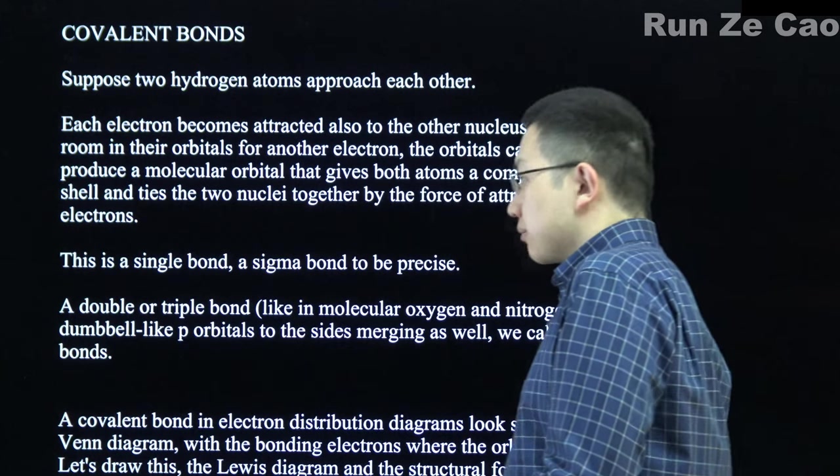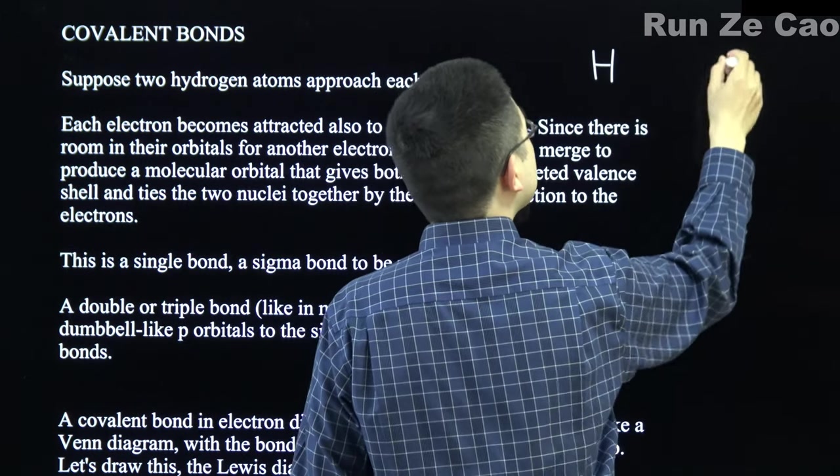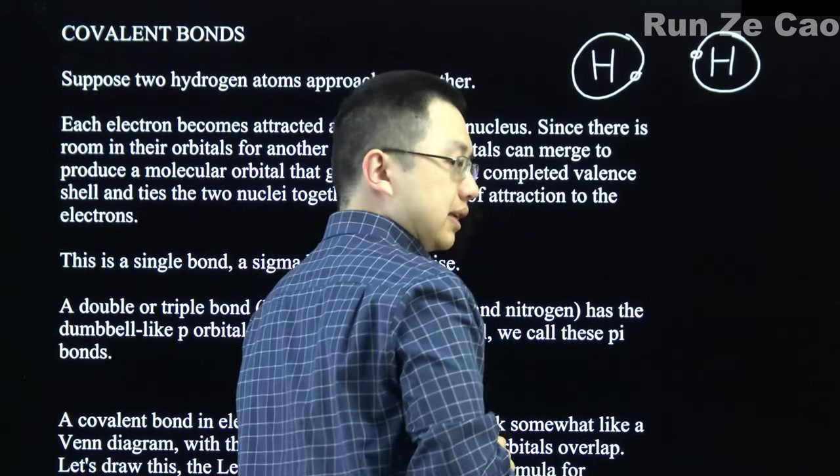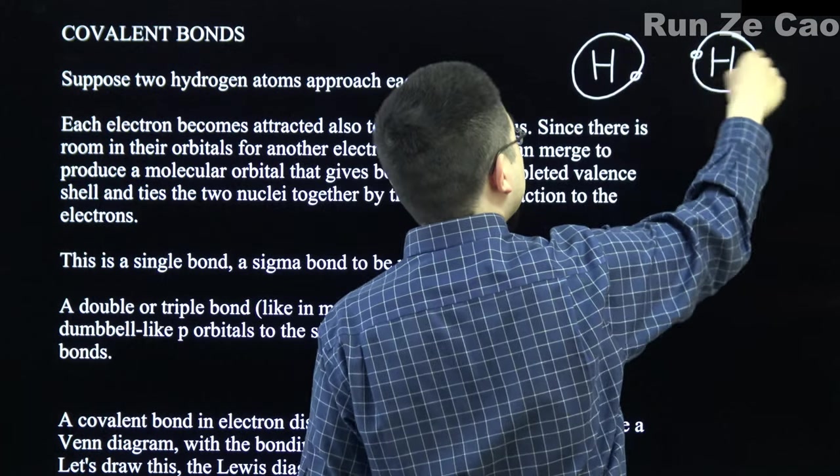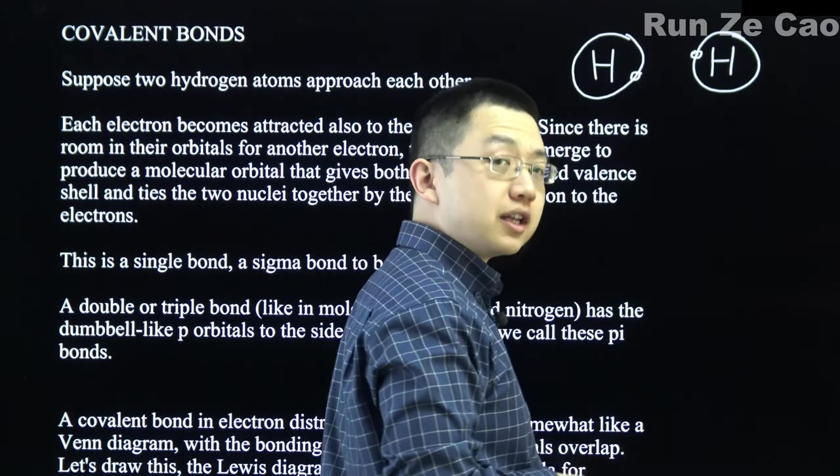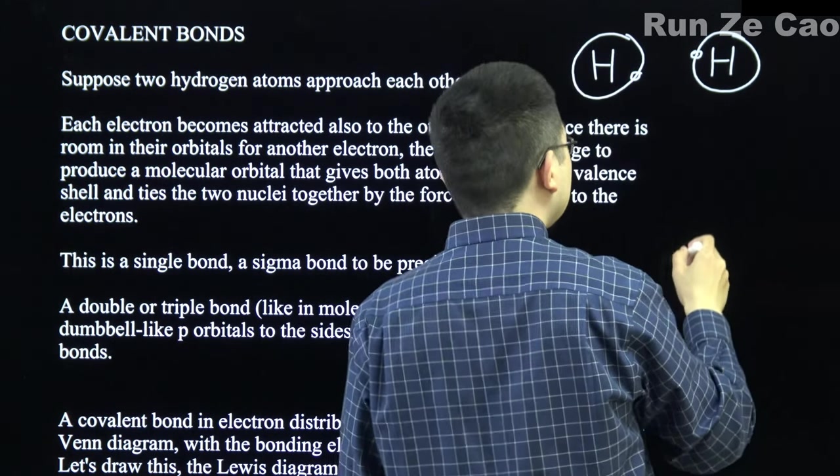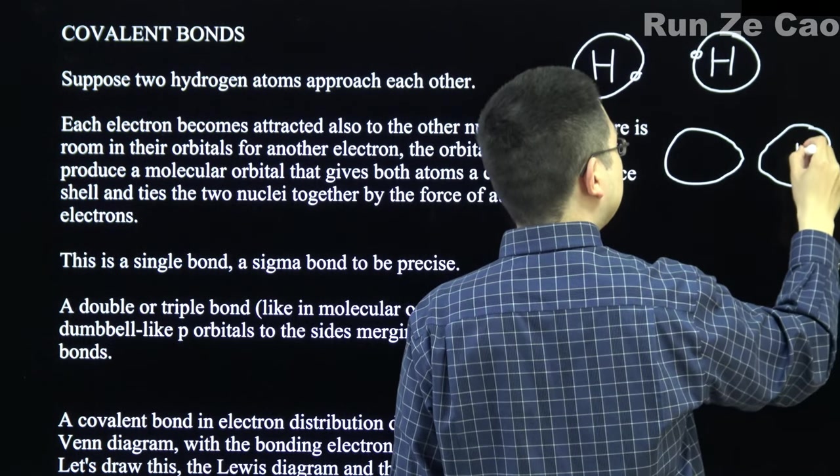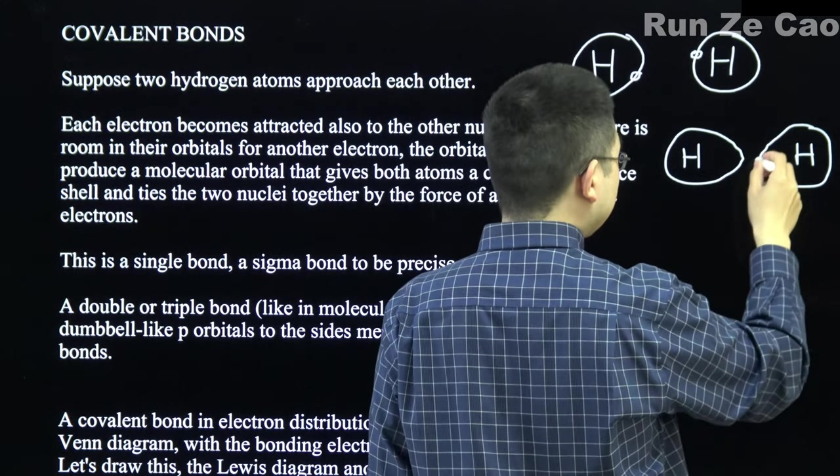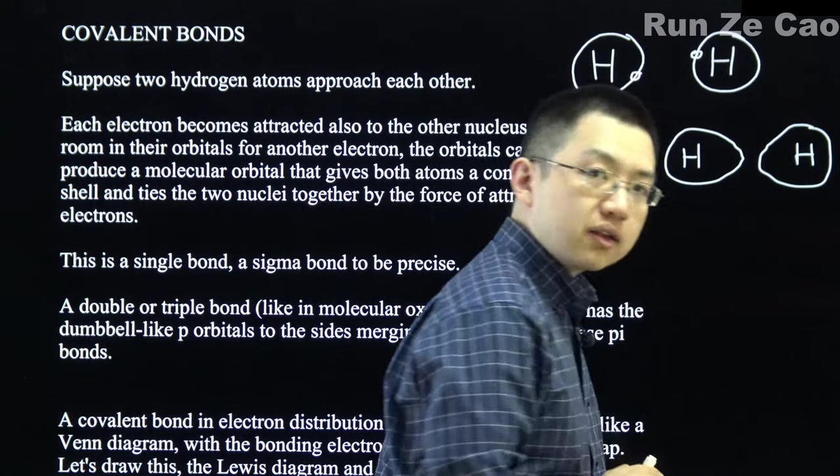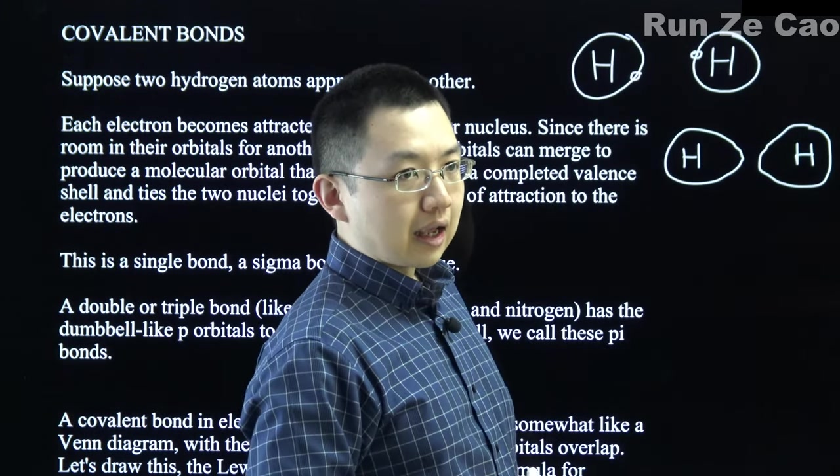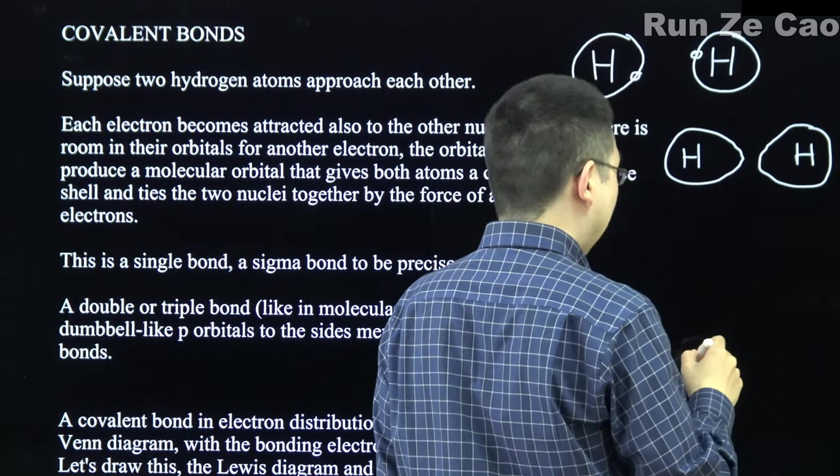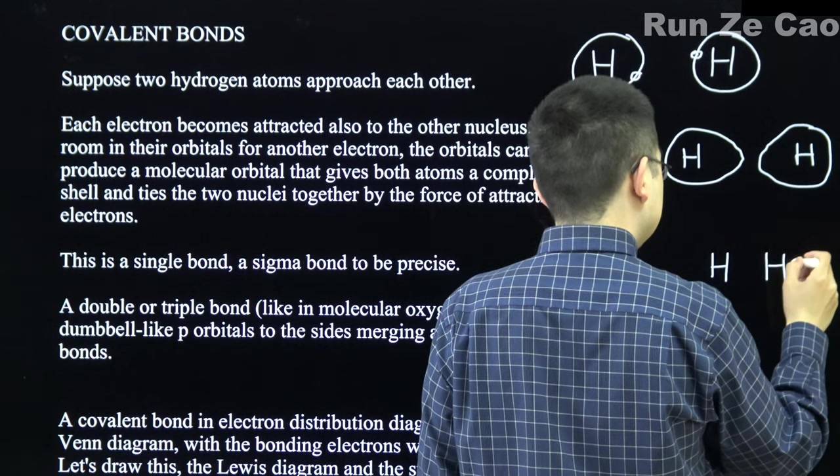So covalent bonds. Suppose we have two hydrogen atoms, each with one electron. This is the spherical electron cloud, the probability distribution. Let's say they approach each other. Then suddenly the electron distribution starts looking more like two teardrops. They're no longer spherical. If these become attracted enough to the other nucleus and the alignment is correct, and they aren't moving too fast, you end up with the two electron clouds merging.